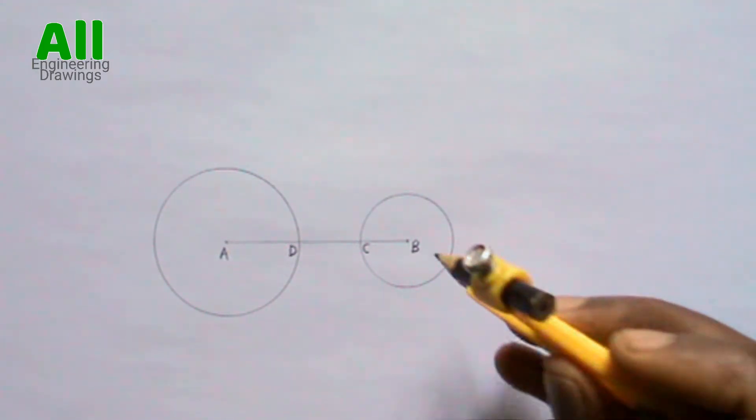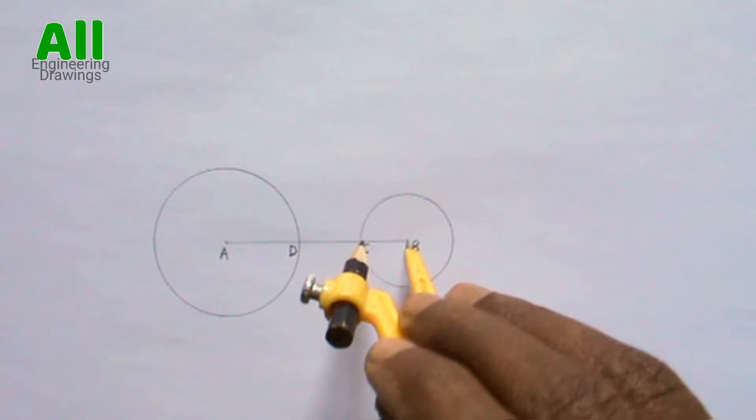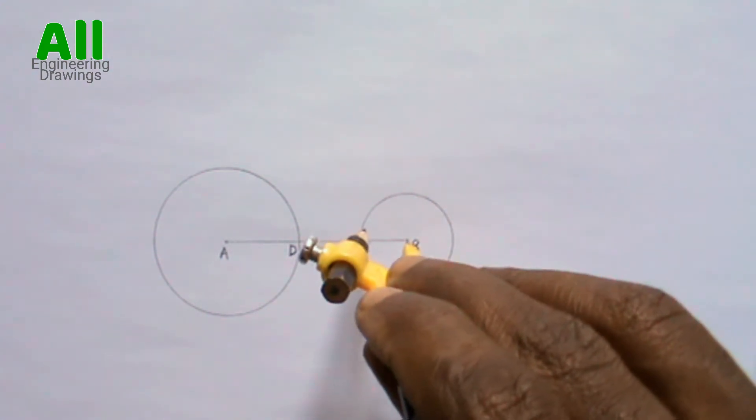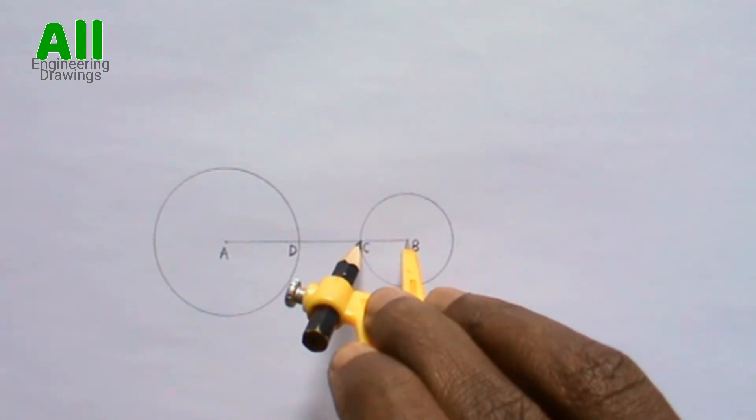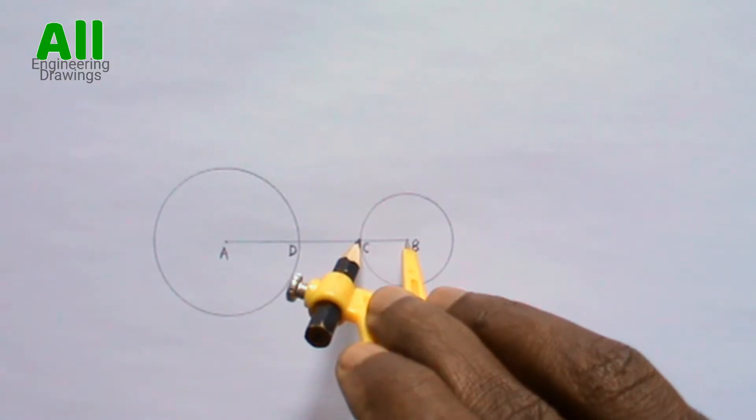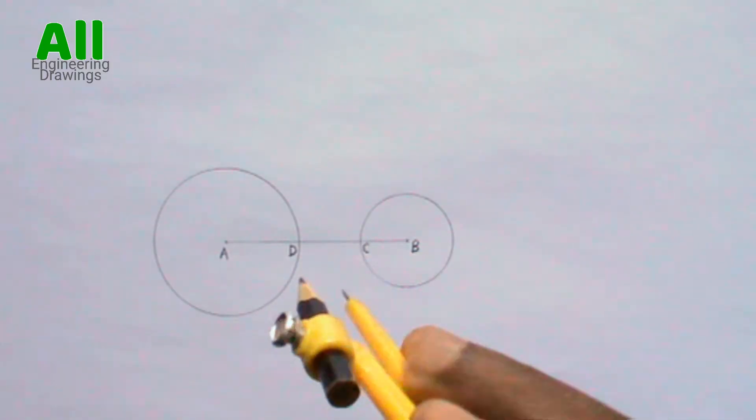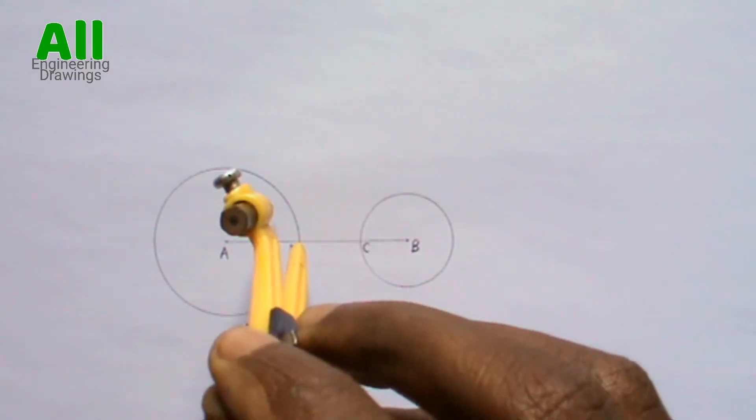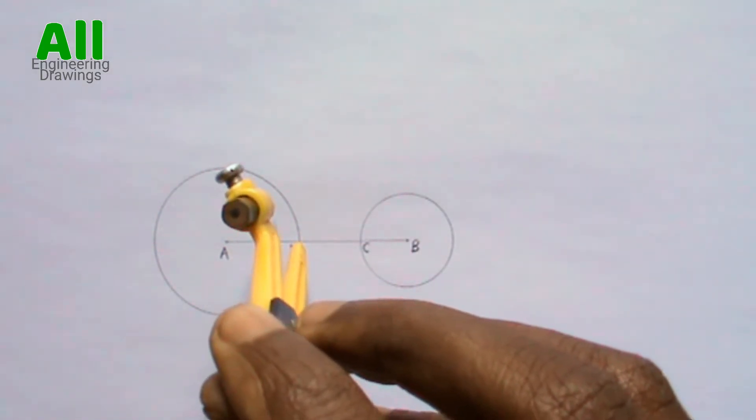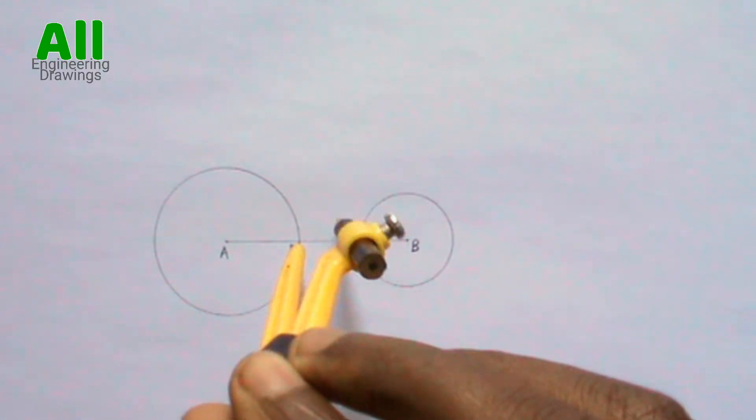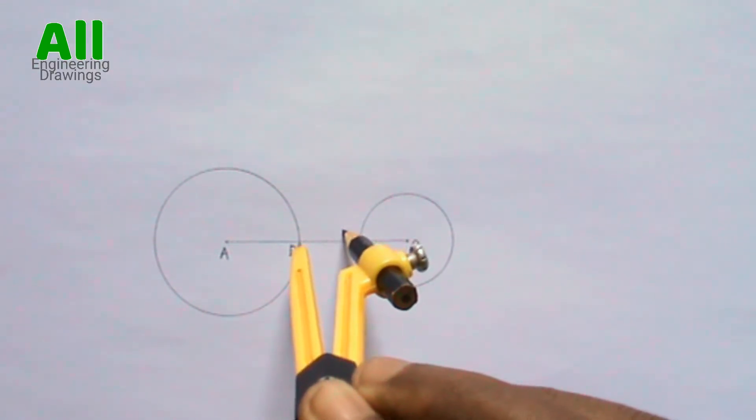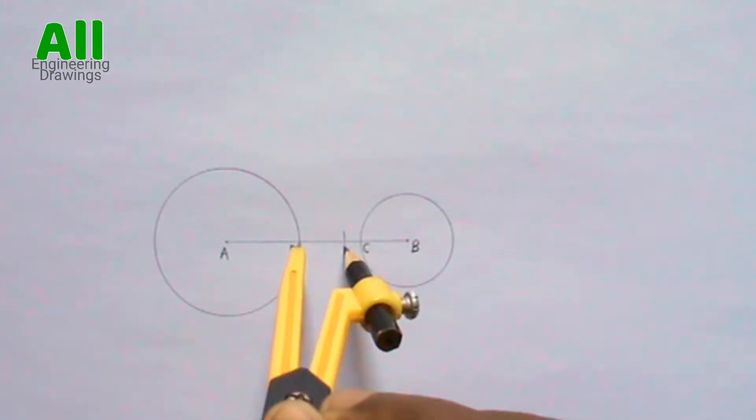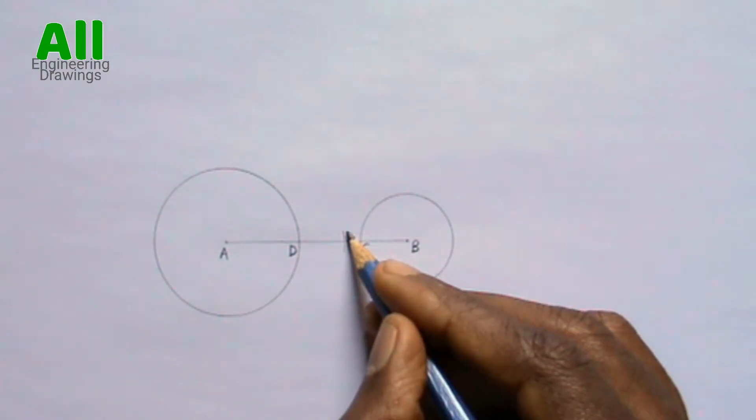Now place your compass on point B, then extend your compass in such a way that your pencil is on point C. Then place your compass on point D, then cut an arc. Label the point where you cut the arc.